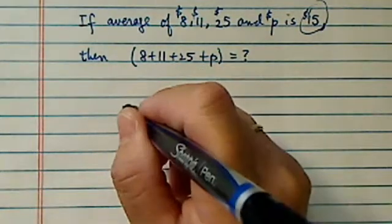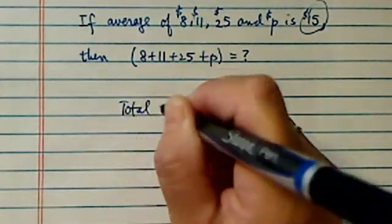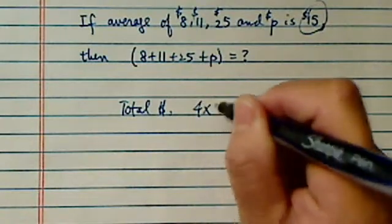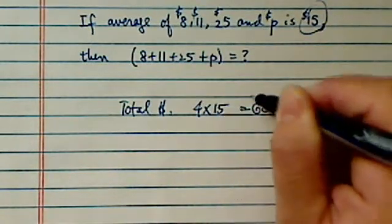Of course, the total dollars you made is 4 times 15, which is $60.